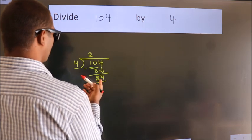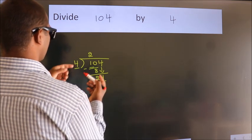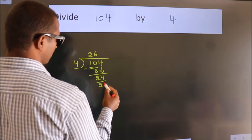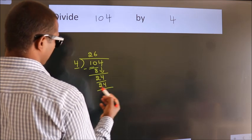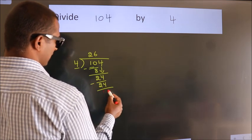When do we get 24? In the 4 table: 4, 6, 24. Now, we subtract. We get 0.